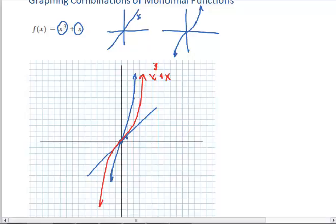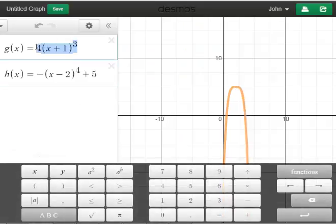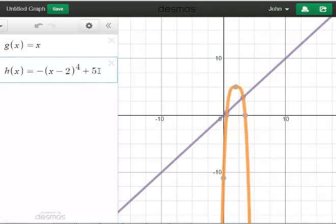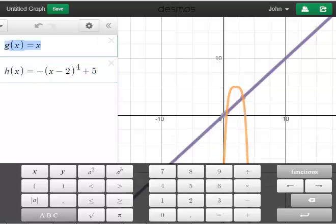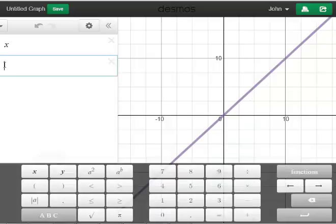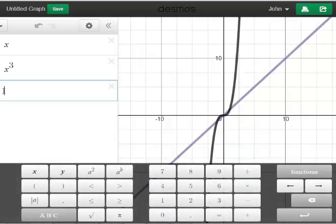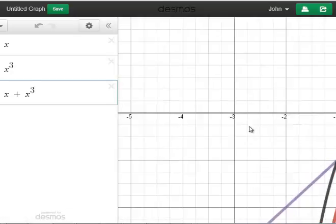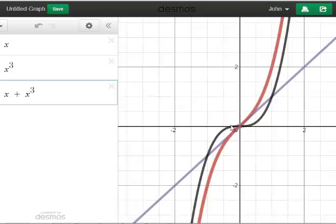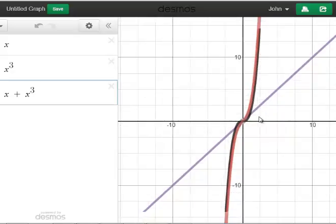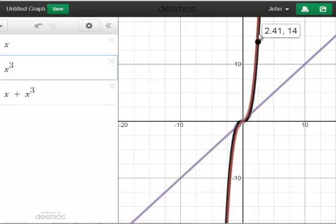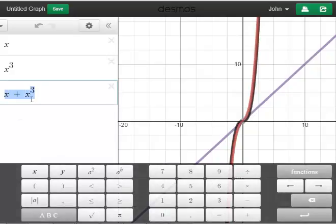Let's verify that with Desmos. This is strictly a qualitative approach to understanding what adding monomials can be. Here I have x for my first function, and x³ for the other function. When I add them together, you can see the combined effect of both functions. The purple function and the red function are the same for low values of x. As x gets really large, the red function and the black function appear to turn into the same function, showing this combined effect.